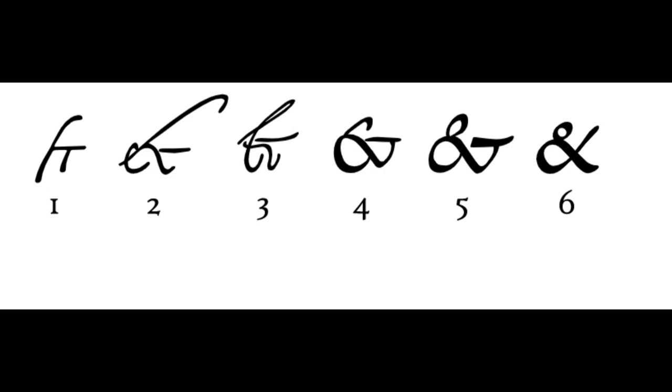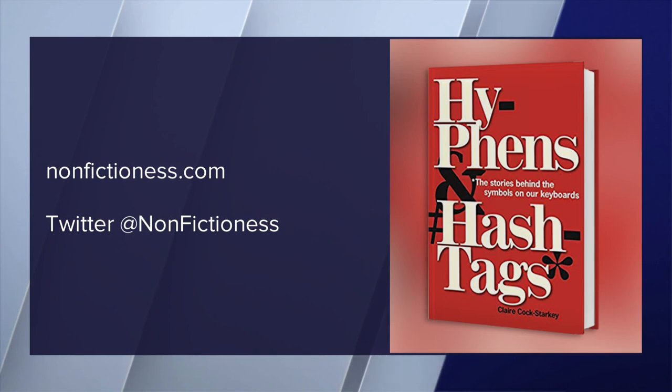How about the dollar sign? Lots of different ideas as to where this one came from, but the most likely route is that it came from peso. The Spanish peso was used as a currency throughout America. When writing it, they'd use a P with a little superscript S. Over time, the S got moved onto the pillar of the P, making the shape of the dollar sign we see everywhere today. Thank you very much for doing all the work in the library for us. For more, you can go to nonfictionist.com.